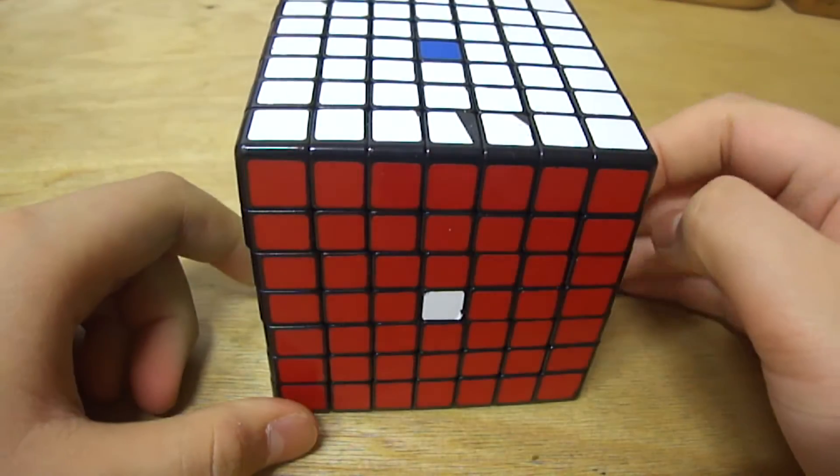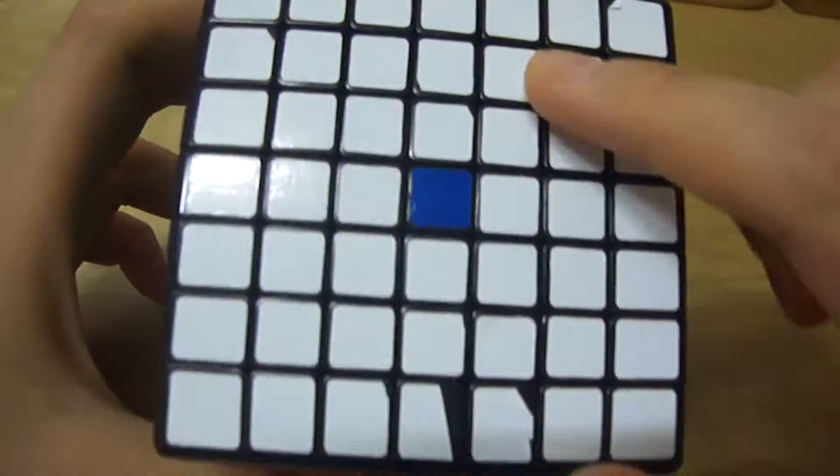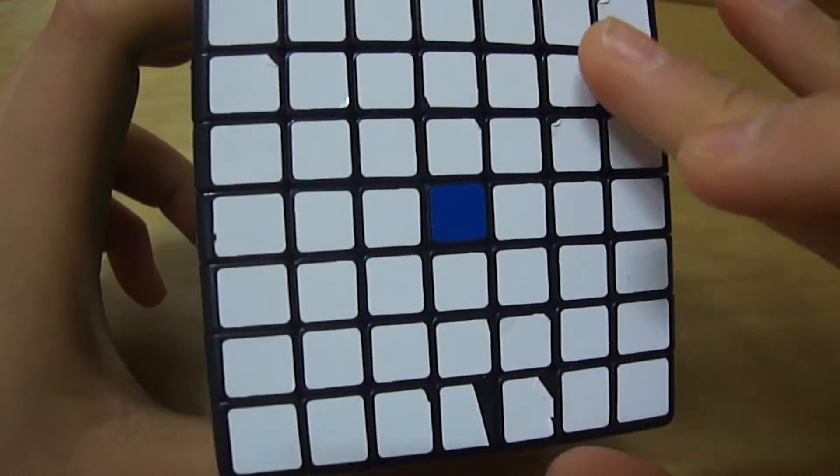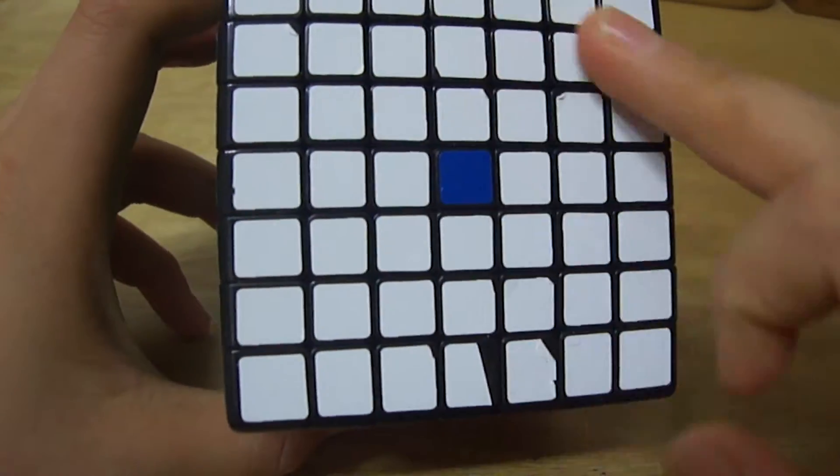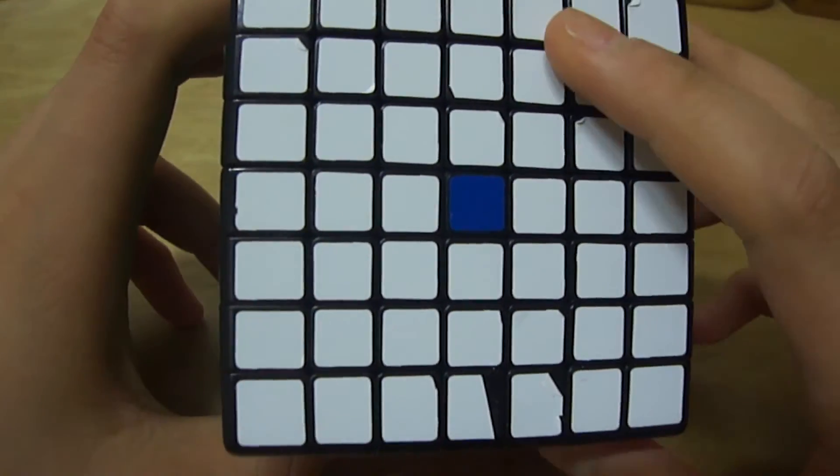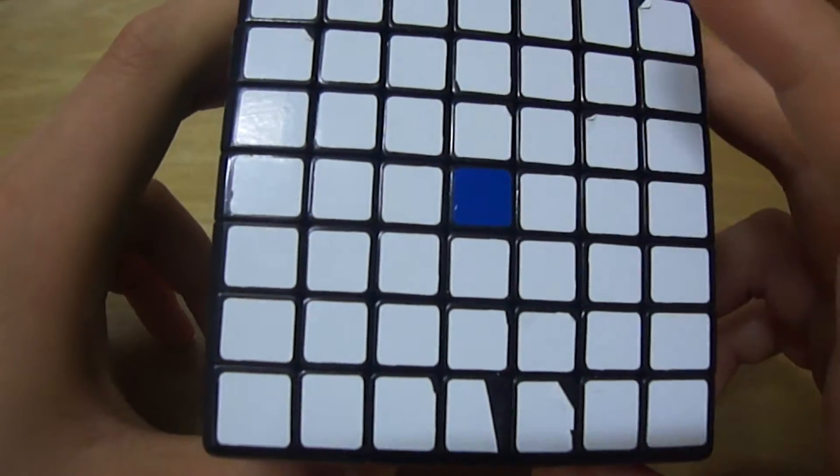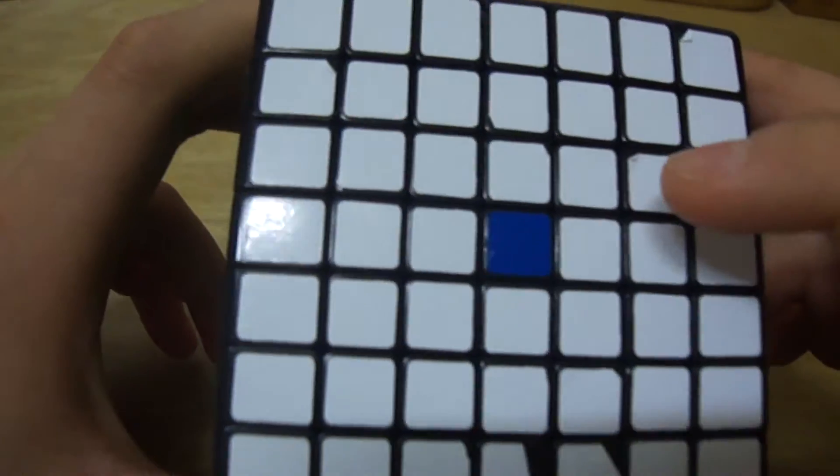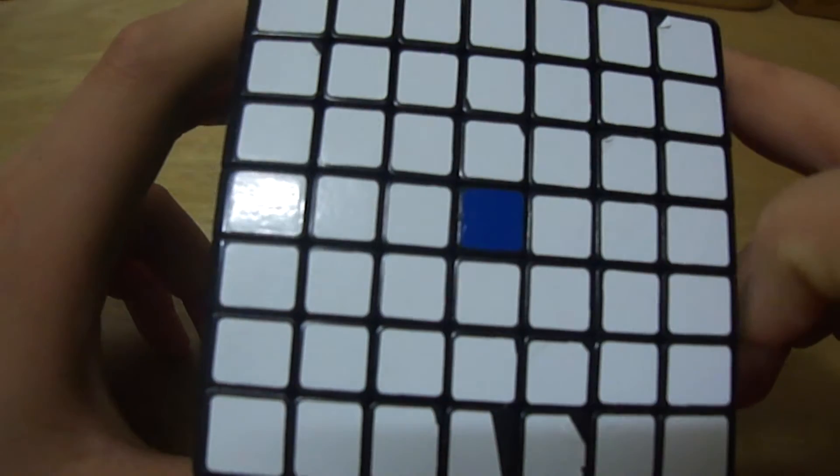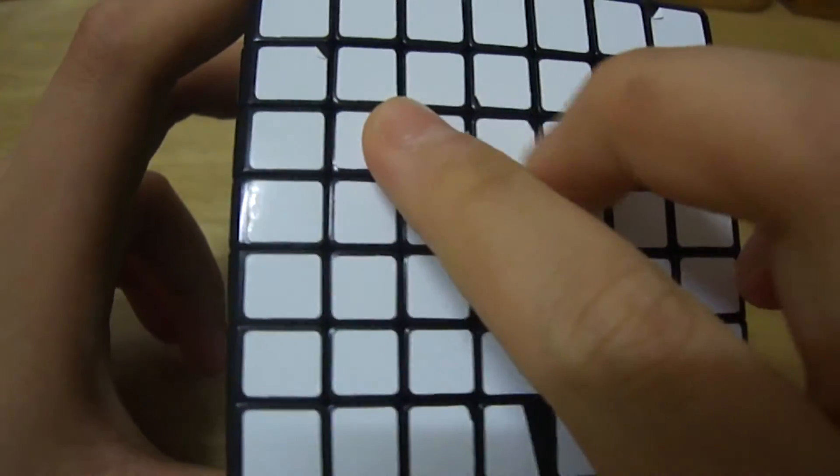But now, in the 7x7, we have more pieces in the center that has no edges or any corners. So that means we can switch other stuff. In order to make a heart, you need to make these two.